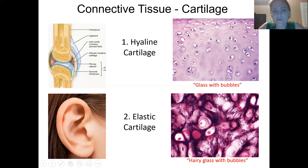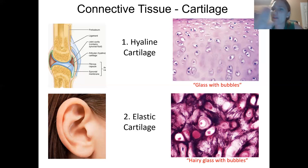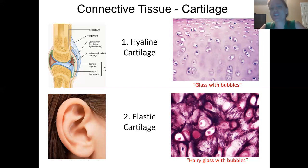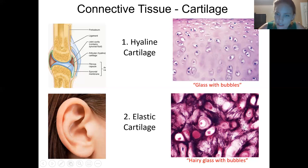Hyaline cartilage looks like glass — like those sculptures made of glass with bubbles in it. You have this very smooth, glassy surface that's the ground substance, and then you have the bubbles which are the cells inside the spaces. Elastic cartilage I call 'hairy glass with bubbles' because it looks very similar, but the major difference is that instead of having that smooth, solid-looking ground substance, it has these elastic fibers running all through it. The presence of those fibers denotes a difference in function.